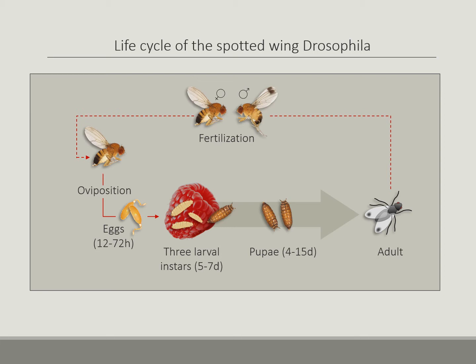Regarding the life cycle of this dipteron, the fertilized female lays eggs by means of an ovipositor, and the hatching larvae use the food for feeding. Eggs hatch in 12 to 72 hours, and the three larval instars progress to the pupa stage in about five to seven days. Finally, pupae become adults in four to fifteen days. However, the extent of the life cycle is related to environmental conditions and nutrient supply.